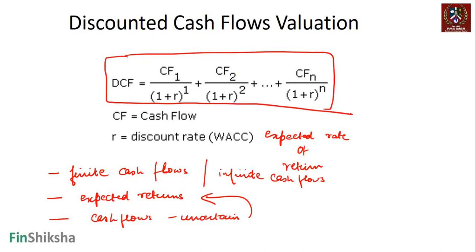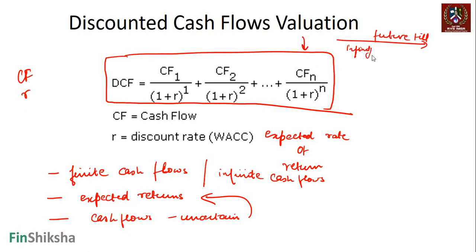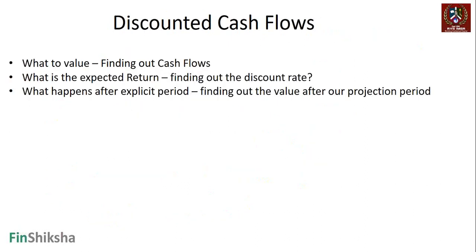So what do I need as inputs? I need the cash flows, I need r, and I need a value beyond these n years of projection — what happens in the future till infinity. Those are the three inputs required when doing DCF valuation.